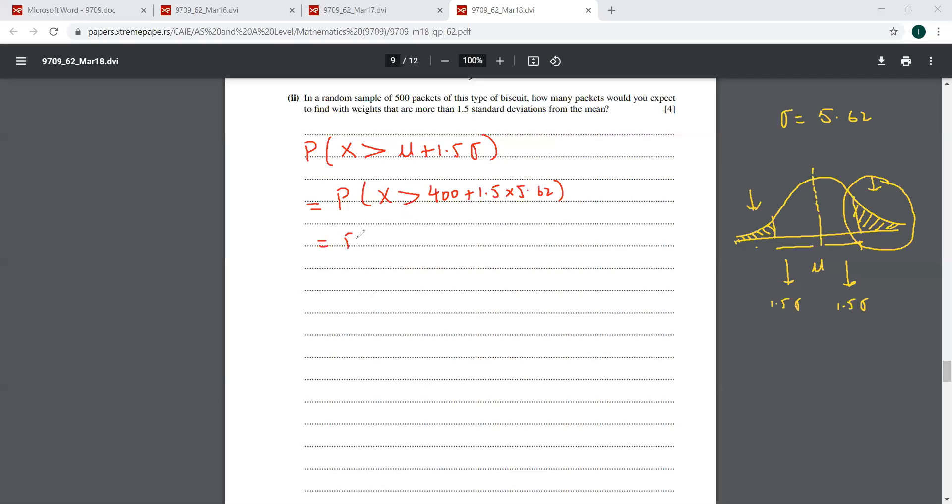So this is the probability X is greater than 408.43.